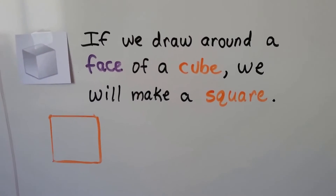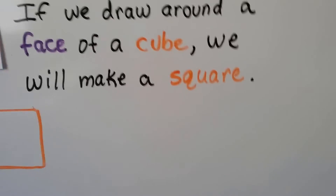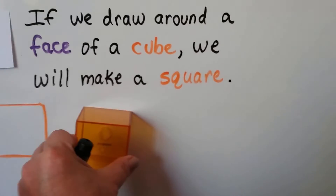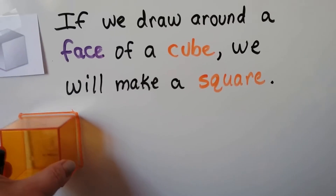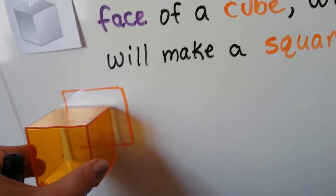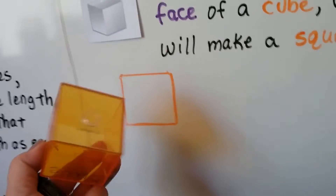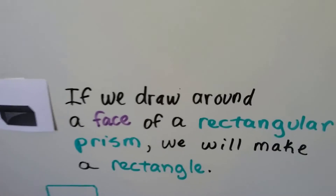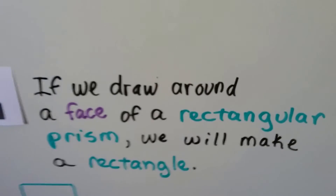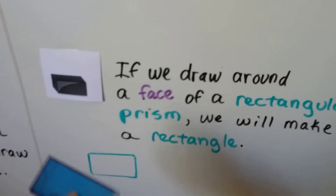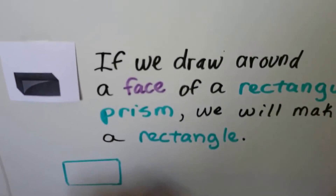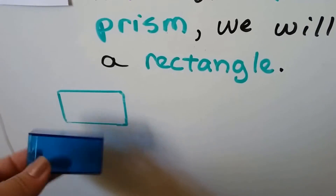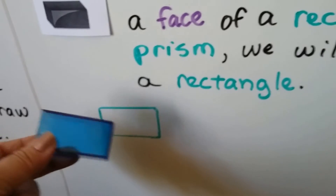If we draw around the face of a cube, we're going to make a square. I take my cube, put it on a piece of paper or on my board, and if I trace around the edge, I make a square because the face is square. If we draw around the face of a rectangular prism, we'll make a rectangle. I take my rectangular prism, put it on my board, drew around it, and I made a rectangle because that's the shape of the face.